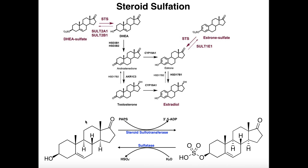Down here at the bottom I've shown the interconversion between DHEA and DHEA sulfate. However, the identical reaction will occur for estrone. The only difference is that estrone has a slightly different structure with the A ring being an aromatic ring. Notice estrone can be converted into estrone sulfate, again through steroid sulfotransferase 1E1, and then converted back to estrone via the steroid sulfatase.